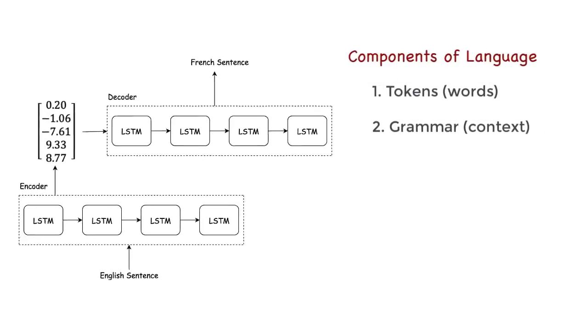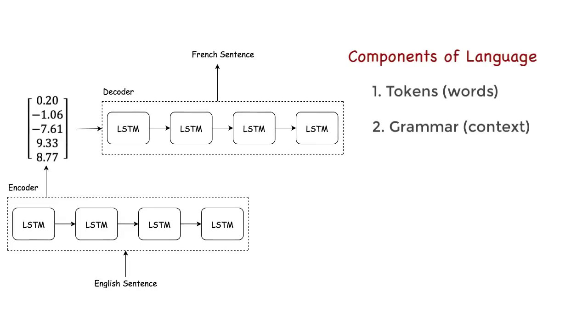So what can we do to improve this translation? Remember what I said before about language. It has two components, tokens and grammar. And it is this grammar that makes language so complex. The problem with the current model is that it's not entirely addressing this complexity.